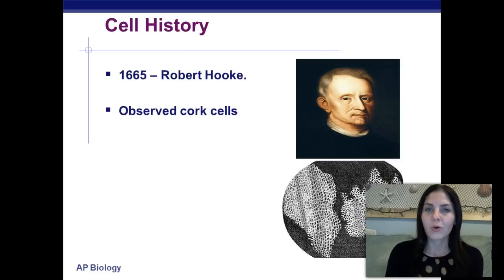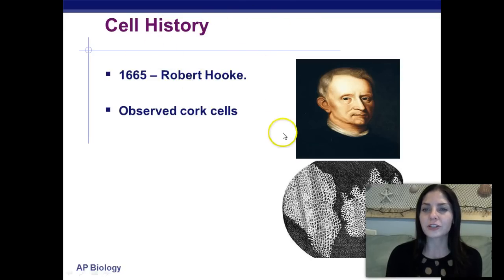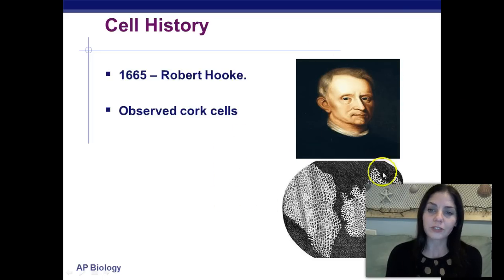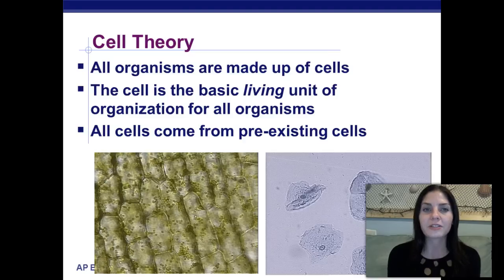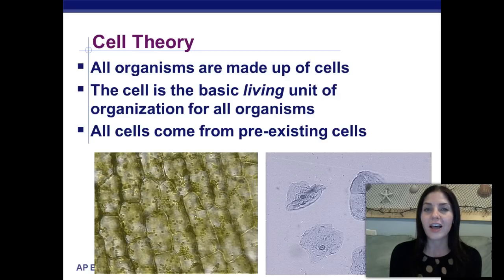So, cell history. One person I just want to briefly touch on is named Robert Hooke. Robert Hooke was actually the first person to see cells — he observed cork cells, probably after a few bottles of wine. The cell theory states that all organisms are made up of cells, that the cell is the basic unit of organization of all living things, and that all cells come from pre-existing cells.